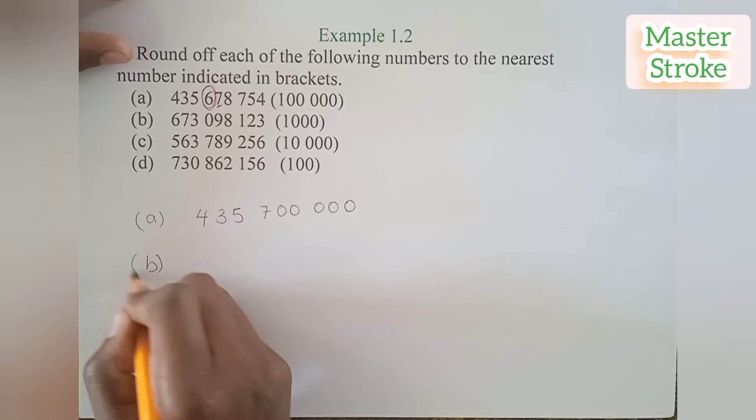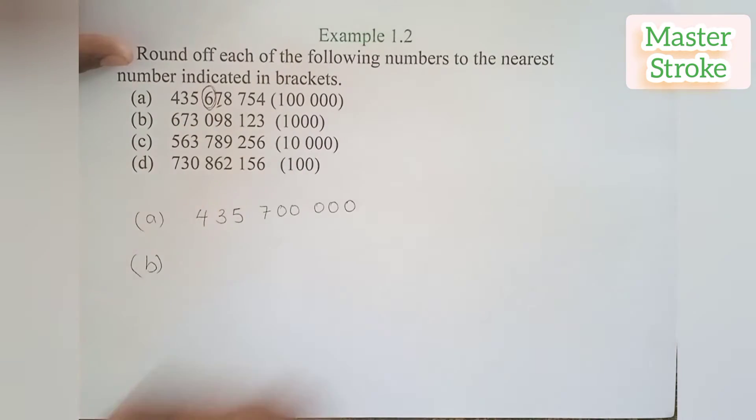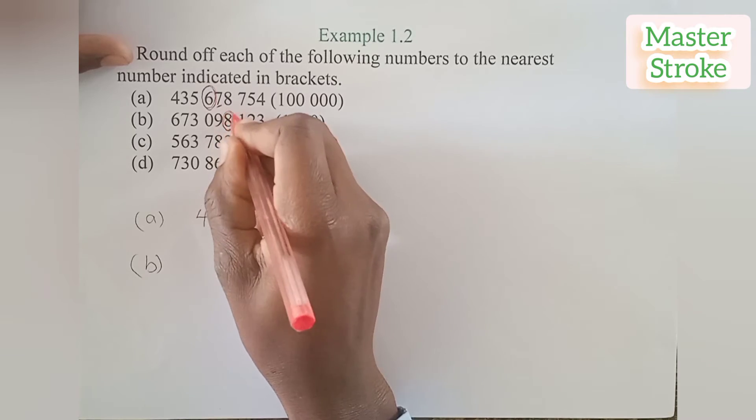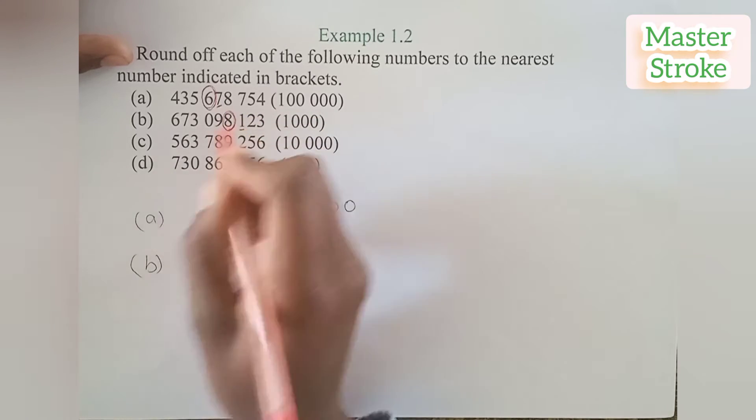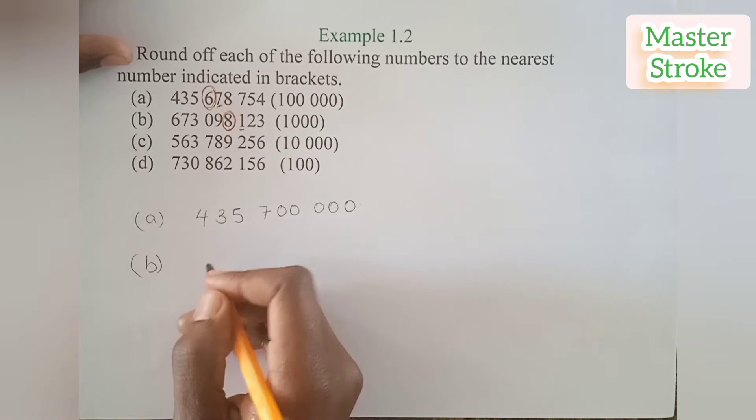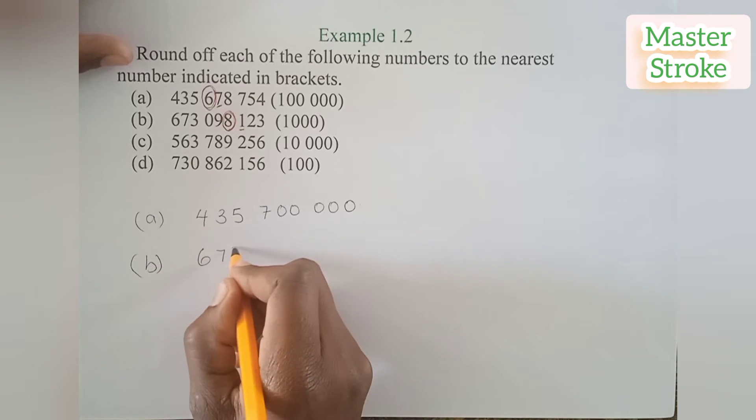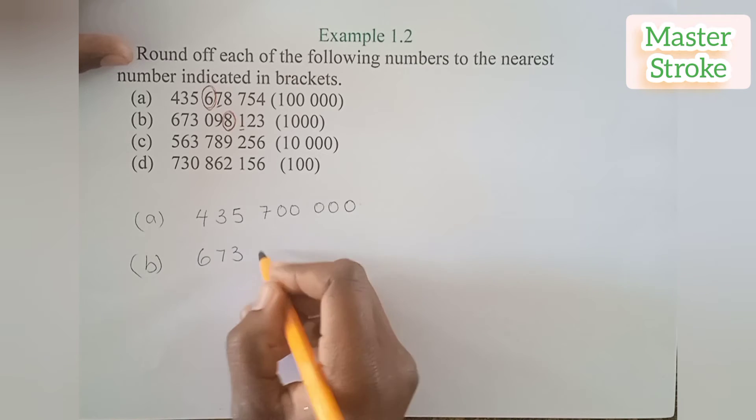For part B we are rounding off to the nearest one thousand, so we check the number at a thousand position which is eight, the number to the right which I am underlining is one. So we round down, the answer becomes six hundred and seventy three million ninety eight thousand.